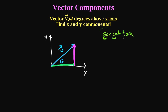In SOH-CAH-TOA, S, C, and T represent sine, cosine, and tangent. O represents the opposite side to the angle, H represents the hypotenuse, and A represents the adjacent side — the side closest to the angle. The hypotenuse is H and the opposite is the side opposite the angle, while A is the adjacent side to the angle.